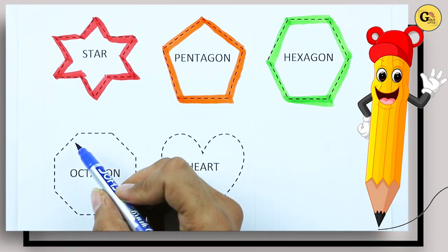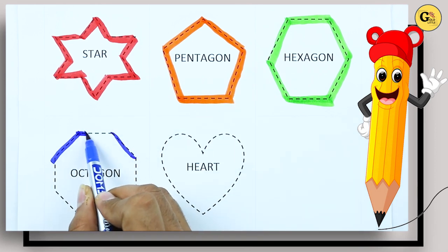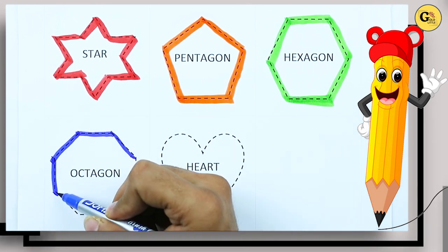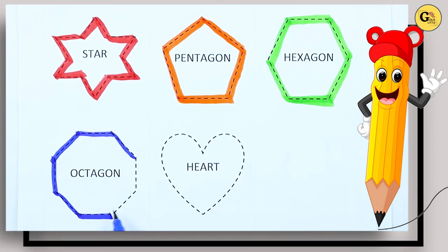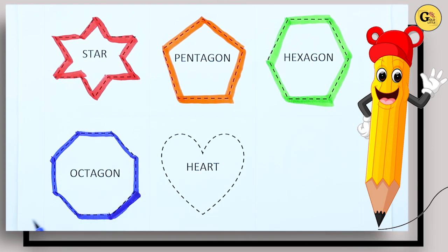Octagon: one line, two line, three line, four, five, six, seven, eight. Eight lines means octagon.